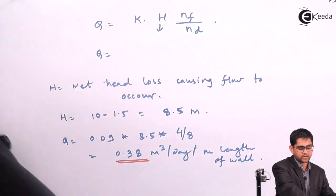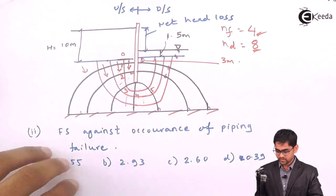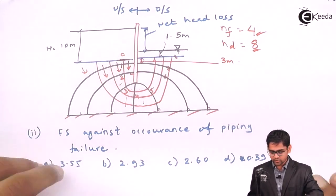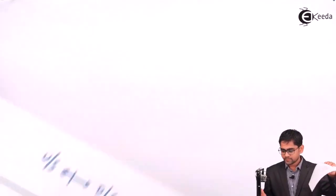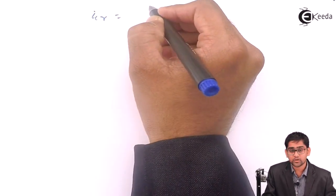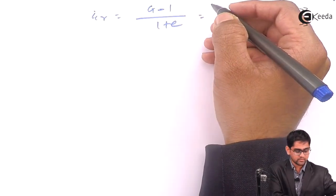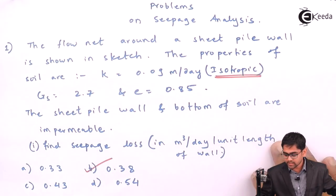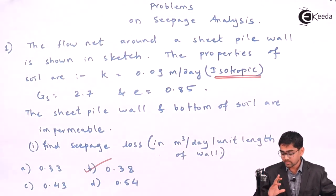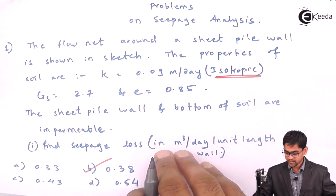Second thing, it is asked to evaluate the factor of safety against occurrence of piping failure. In order to calculate the factor of safety against piping failure, you need to first find out the critical hydraulic gradient. The critical hydraulic gradient is (GS - 1) divided by (1 + e). You can derive it from effective stress equal to 0 principle. The flow has to be in an upward case because only if the flow is upward, then only quicksand condition will happen.